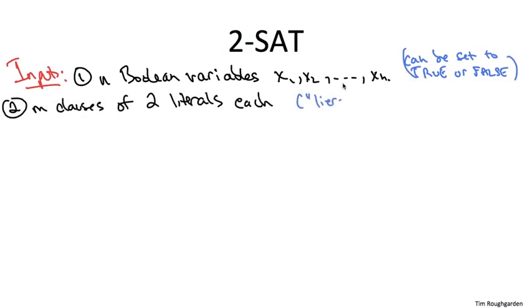Each of the m clauses is a disjunction, that is an or, of two literals. A literal is simply either a variable or the negation of that variable.